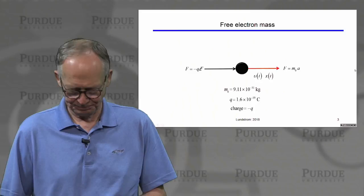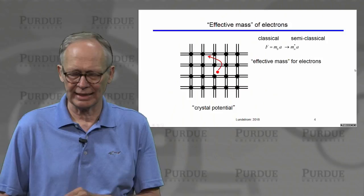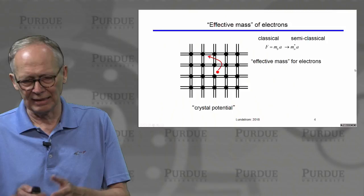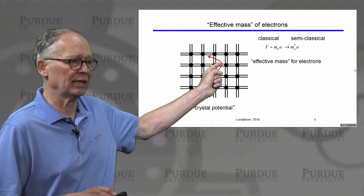We have a much more complicated situation here. Electrons in the conduction band wander around the crystal lattice, experiencing all kinds of Coulomb forces due to the bonds, the atoms, the other electrons, and the holes. It's quite a complicated problem — how do you describe the motion of an electron in a crystal lattice?